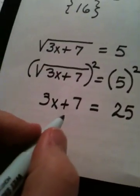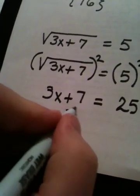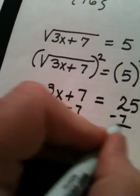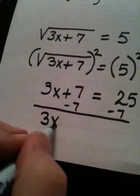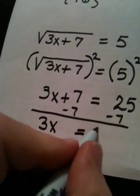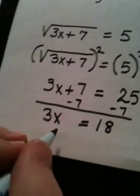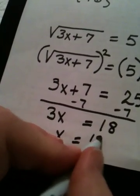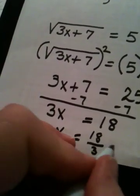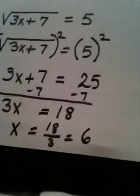Now, I subtract 7 from both sides. 3x is equal to 18. I divide by 3, and I get that x is 6.